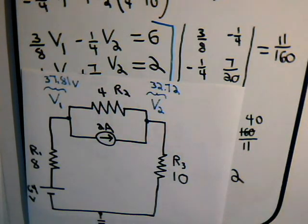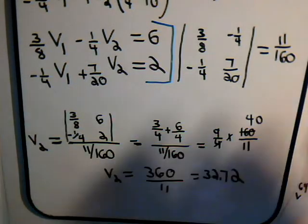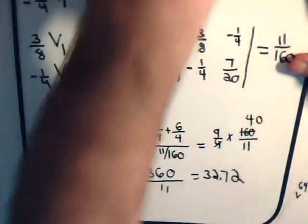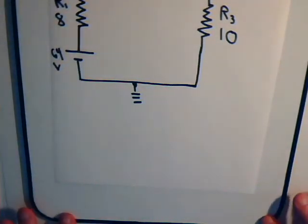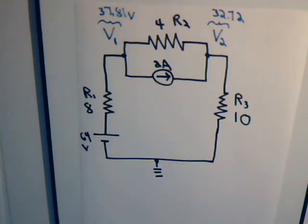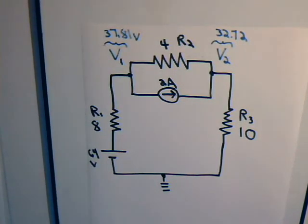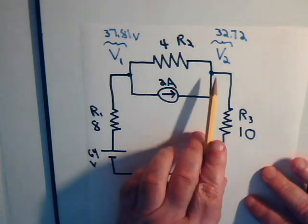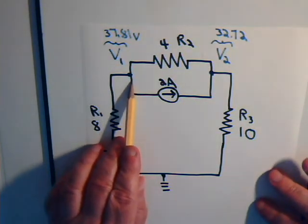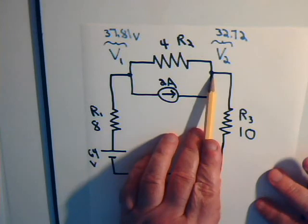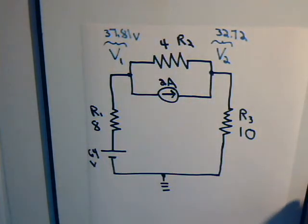Now what we want to do is determine the current through the resistors. Now remember when we were setting up the problem, this is node 1, this is node 2, and we know for sure there's 2 amps flowing out of node 1 and 2 amps flowing into node 2.